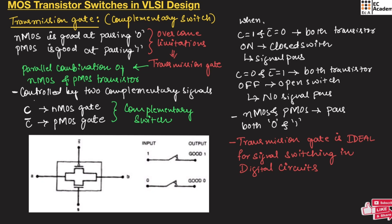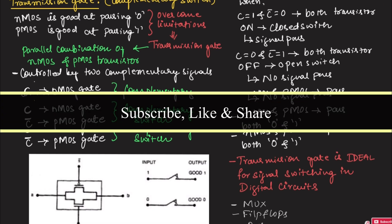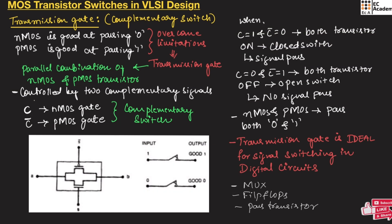The transmission gate is ideal for signal switching in digital circuits since there is no signal degradation. Transmission gates are used in multiplexers, flip-flops, and pass transistor logic gates. This concludes MOS transistor switches in VLSI design. Hope you have understood the topic. Thank you.